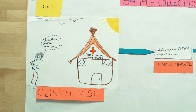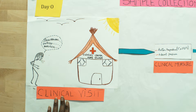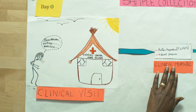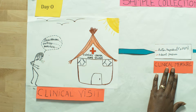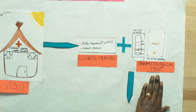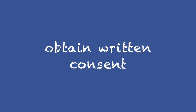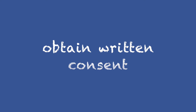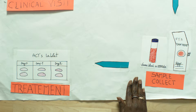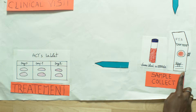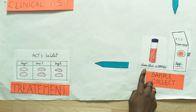Day zero: when the patient comes to the clinic with malaria symptoms, we first perform clinical measures by taking temperature and blood pressure. After that, we perform parasitological tests — a thin and thick blood smear — and a rapid diagnostic test to confirm if it is really Plasmodium falciparum. If these tests are positive, we explain the protocol to the patient.